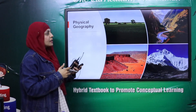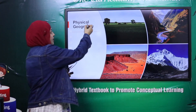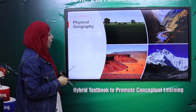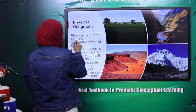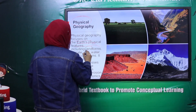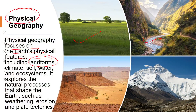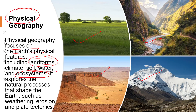When we discuss different landforms, that is called Physical Geography. Physical Geography focuses on the Earth's physical features including landforms — such as plains, rivers, mountains, plateaus, and glaciers. In this we discuss landforms, climate, soil, water, ecosystems, and how the environment and human beings interact. We also discuss the Earth's natural processes.